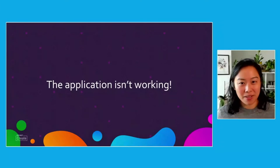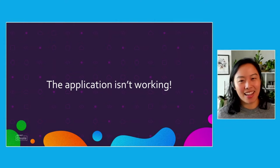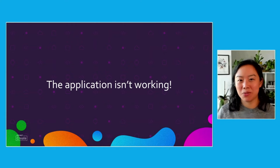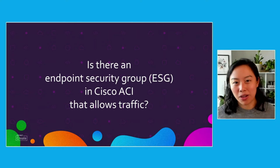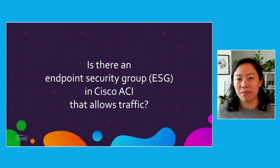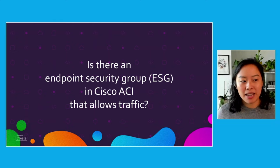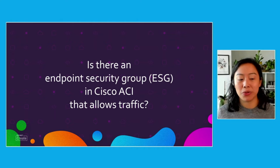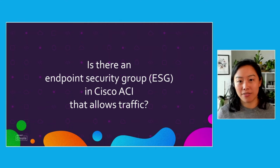There's a really interesting problem we encounter quite often, and that's the application isn't working. Whenever we hear that statement, we have to think about how do we debug? Usually the first place we debug as network or infrastructure engineers is the firewall. Is there a security group somehow blocking that traffic? Is there an endpoint security group in Cisco ACI that is allowing that traffic?